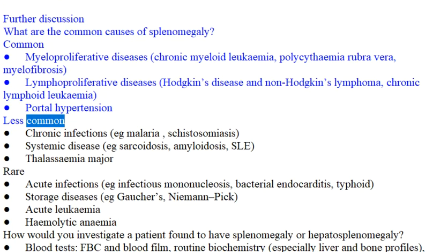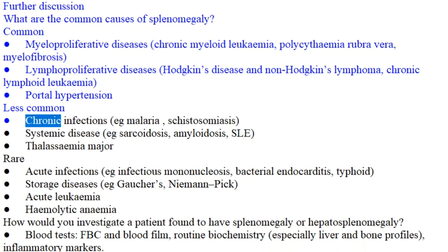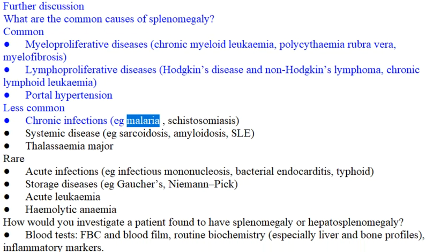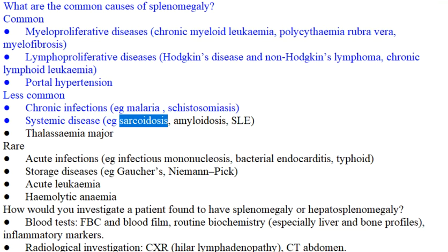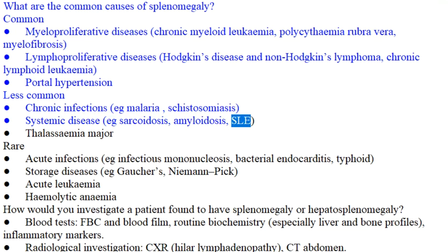Less common causes include chronic infections, e.g. malaria and schistosomiasis; systemic diseases, e.g. sarcoidosis, amyloidosis, and SLE.